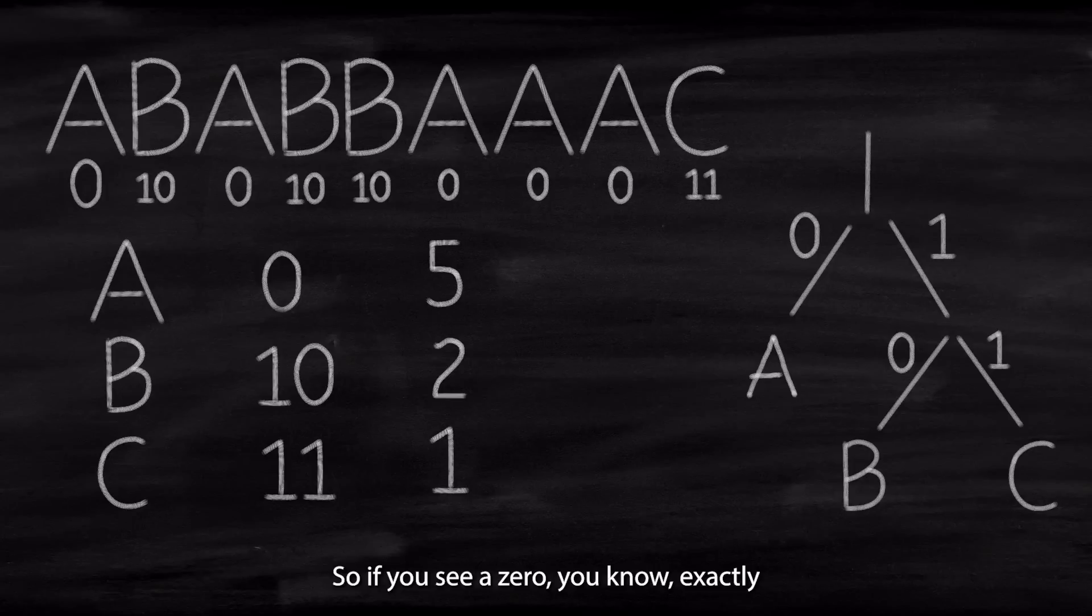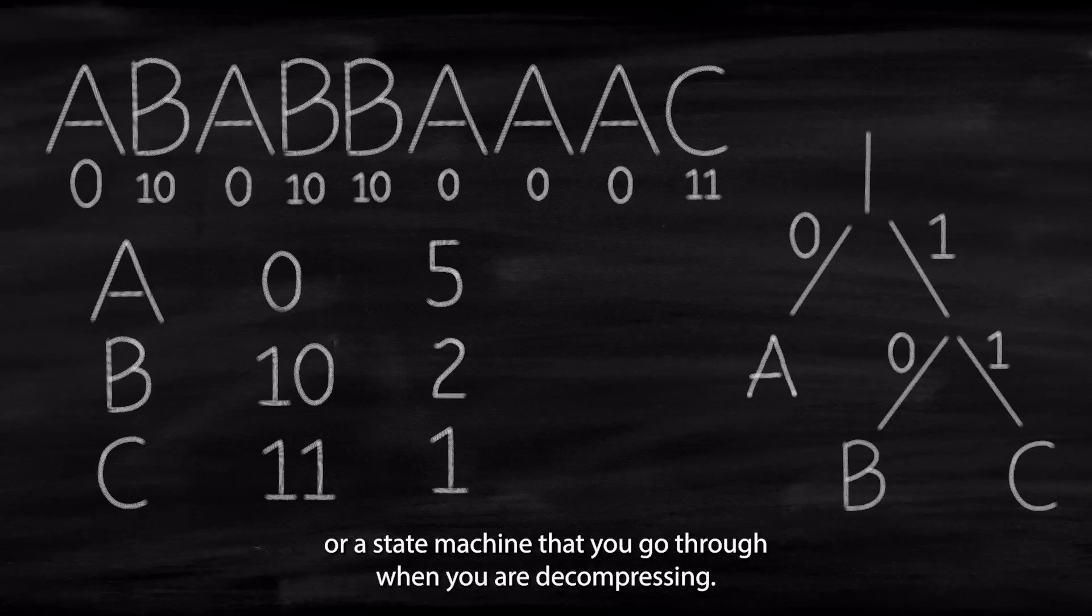Or actually, binary tree. So if you see a 0, you know exactly it's an A. If you see a 1, then it's either B or C. So then you check. So 0 is an A. And then 1 means we have to check either it's B or C. So then the next would be 0. Now we are here. So okay, we have reached a leaf node. So it's B. Then now we are at 0 again. So we are here again. So it's an A. And so on.